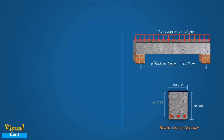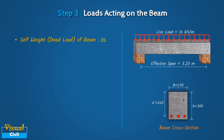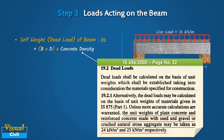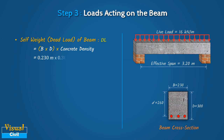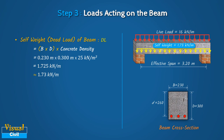In Step 3, calculate the load acting on the beam. First, calculate the self-weight or dead weight of the beam by multiplying the cross-sectional area of the beam with concrete density. Consider the concrete density as 25 kN per meter cube by referring to clause 19.2.1 of IS456. After putting the values of concrete density, width, and depth of the beam, we get the dead load as 1.73 kN per meter. The live load or imposed load on the beam is given as 16 kN per meter.